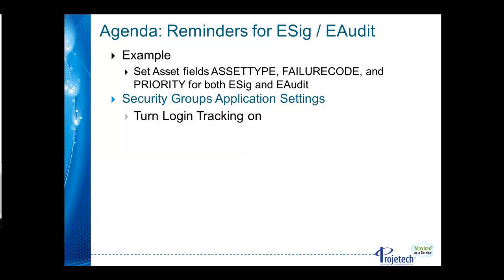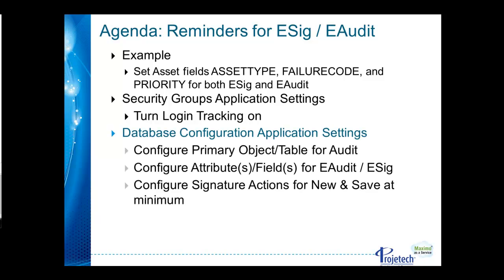During the process of setting this up, we can begin with the security groups application to turn on login tracking. You only need to do that once for the application. Next, we'll go to database configuration, configuring the primary object or table — in our case, asset. The attributes or fields for eSIG and eAudit and signature actions for new and save. Please remember to configure both new and save, as new will capture the initial record creation details and save will pick up subsequent modifications.